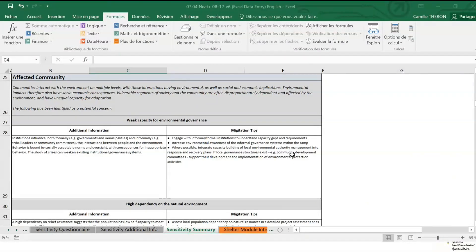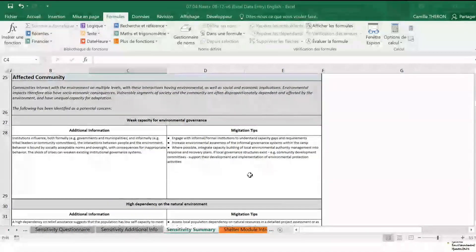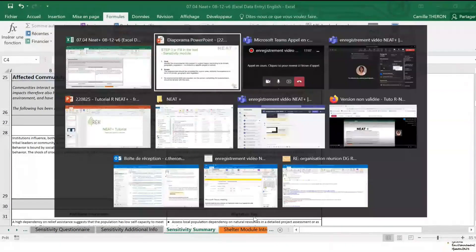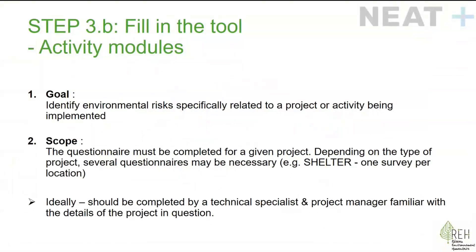And we are done with the environmental sensitivity module. As you can see, you already have recommendations that can be used quite quickly. Now let's take a look at the activity modules. Their objective is to identify the environmental risks that are specifically related to a project or activity that you are going to implement.